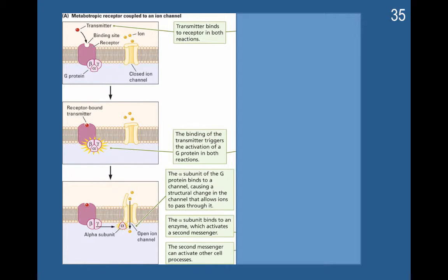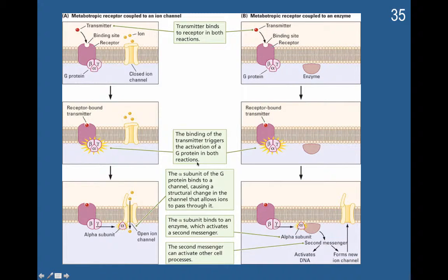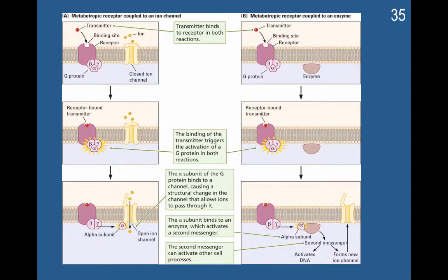The second messenger cascading or alternate effects are also visible here. The transmitter can bind again to the G protein, the alpha subunit is released, and it interacts with another enzyme and can function as a second messenger. The combination of this enzyme and the alpha protein second messenger can then form new ion channels, or it can activate DNA. In this way, metabotropic receptors have the potential to change the makeup of the neuron — the number of ion channels and the number of autoreceptors — causing important structural changes in a cell.